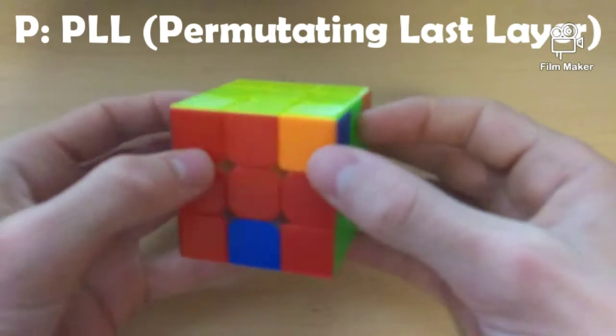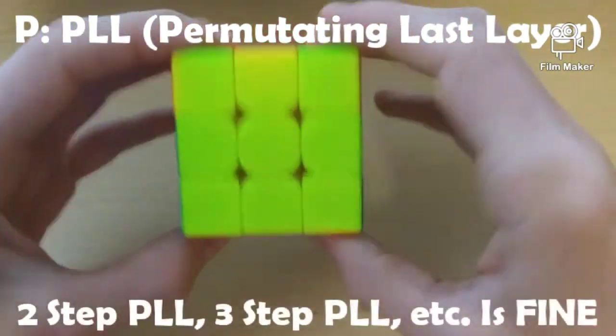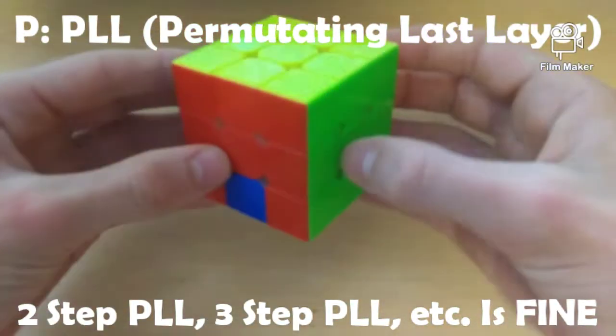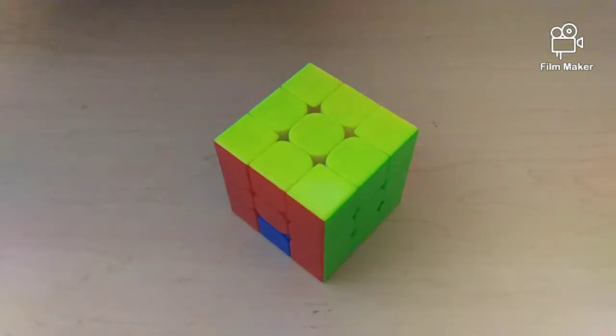And now, as you can see, we have a recognizable PLL case. And this is an A perm. So, I am going to go ahead and do the algorithm. And PLL is complete. So, now we are on the final step of CFOP or CFOPI. And this is not a step that just normal CFOP contains.